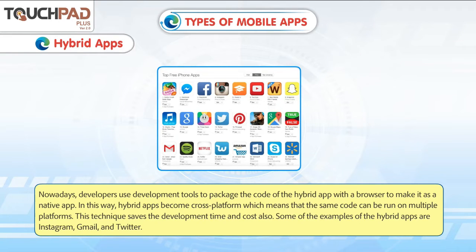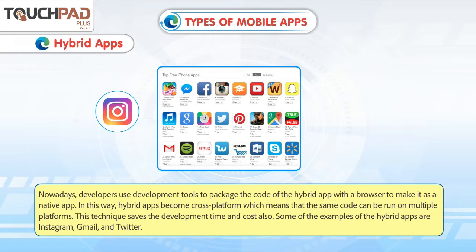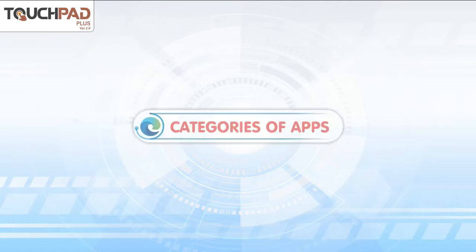In this way, hybrid apps become cross-platform, which means that the same code can be run on multiple platforms. This technique saves the development time and cost. Some of the examples of hybrid apps are Instagram, Gmail and Twitter.